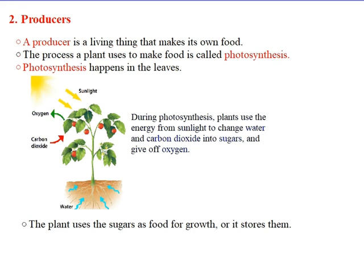Photosynthesis happens in the leaves. During photosynthesis, plants use the energy from sunlight to change water and carbon dioxide into sugars and give off oxygen. Looking at the picture, we can see that the plant uses energy from the sun, takes water from the soil and carbon dioxide from the air, and gives back oxygen and food. The plant uses the sugars as food for growth, or it stores them.